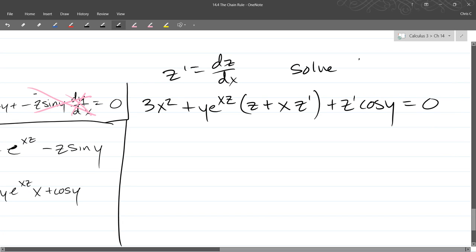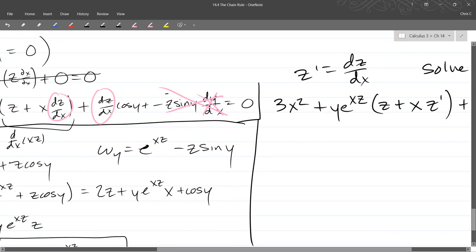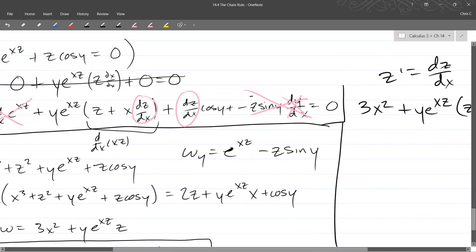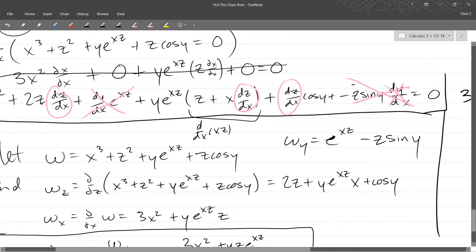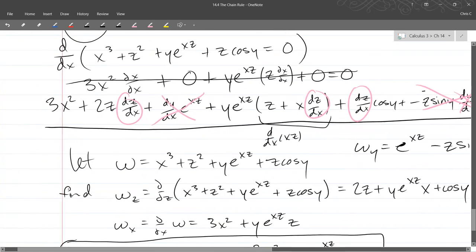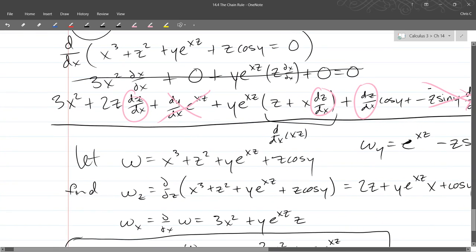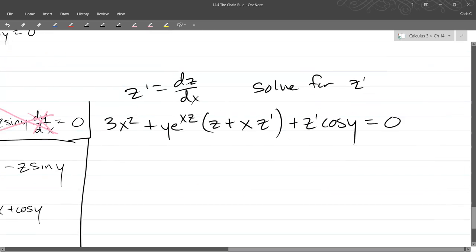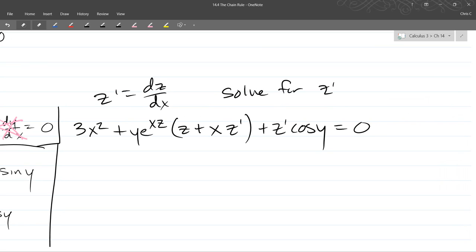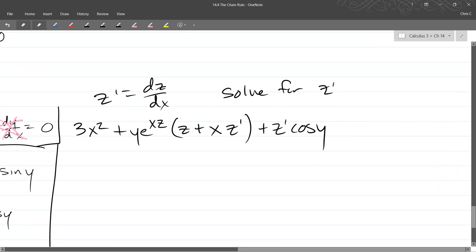Plus z prime cos y minus zero equals zero. What about that 2z prime? Uh-oh. Plus 2z z prime. Yeah, absolutely. And we will just slide the zero over, equals zero part. All right. Definitely would not have had a chance getting the right thing without that.